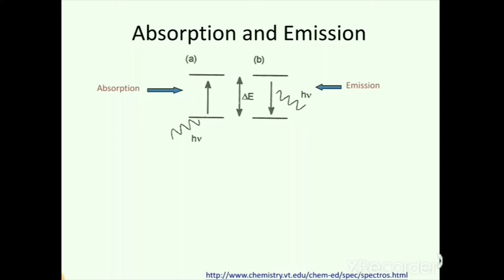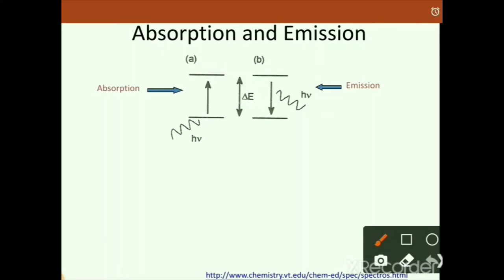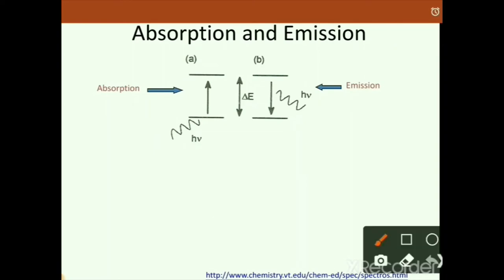In spectroscopy, there are two key terms: absorption and emission. When an electron absorbs energy, it shifts from the ground state to the excited state — this is absorption, and the study of this absorbed energy forms the basis of absorption spectroscopy. Emission is the reverse phenomenon: when an excited electron drops from the excited state to the ground state, it emits energy, and study of this emitted radiation forms the basis of emission spectroscopy.